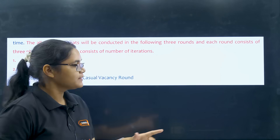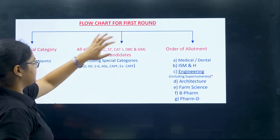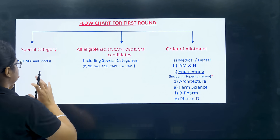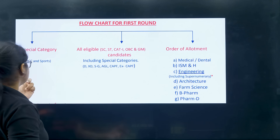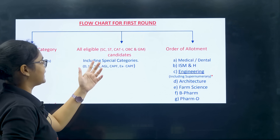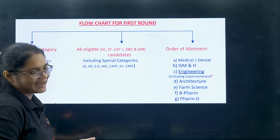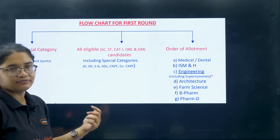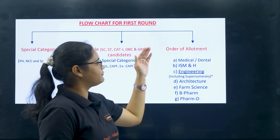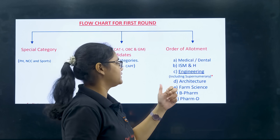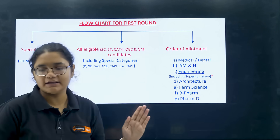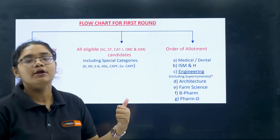In the first round, the first phase considers special category students — PH (physically disabled), NCC, and sports students — first. After that come special categories like SC/ST, Category 1, OBC, and general merit candidates including defense categories. The discipline-wise order is: medical and dental first, then ISM and homeopathy, then engineering, architecture, farm science, B Pharma, and lastly D Pharma.